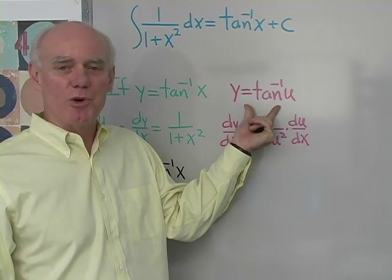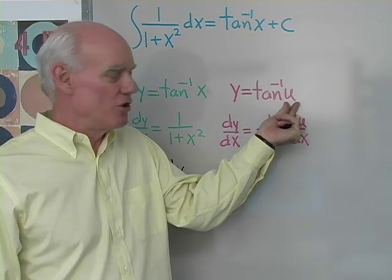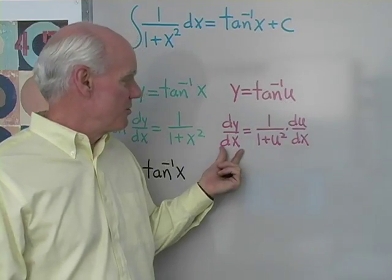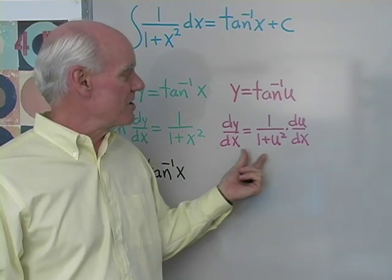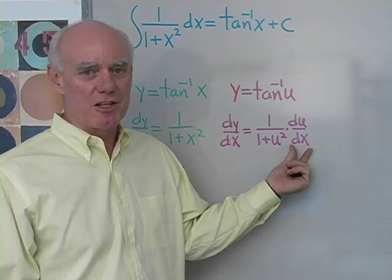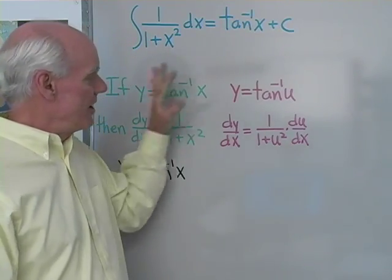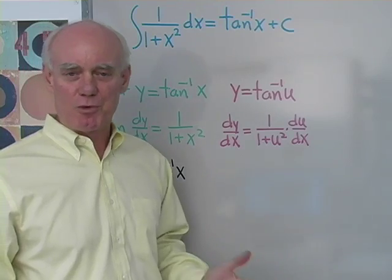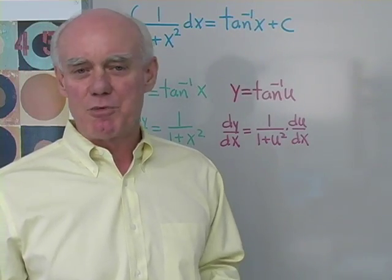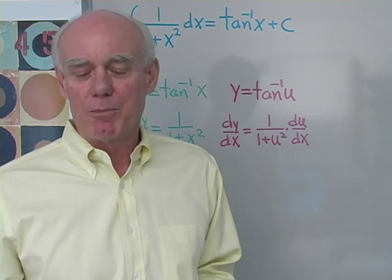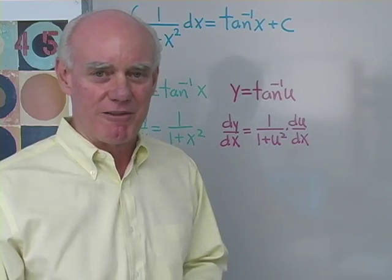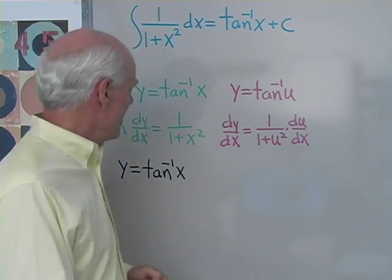Likewise, with the chain rule, if I have y as inverse tangent u where u is a function of x, then the derivative of y with respect to x is 1 over 1 plus u squared times du dx. I want to derive these formulas quickly because that's how I remember them — I go back to the trig functions and do the derivations.